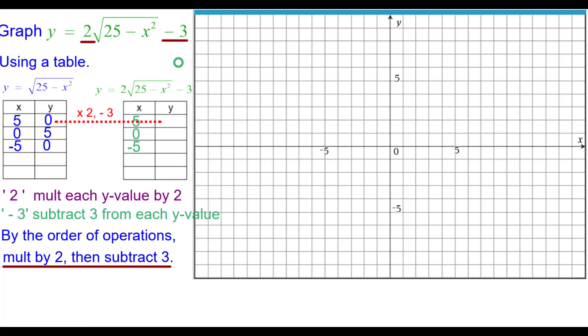And 0 times 2 minus 3 will be negative 3. And the calculation is shown over here. 5 times 2 is 10 minus 3 is 7, 0, 7. And 0 times 2 is 0 minus 3 is negative 3, so negative 5, negative 3.